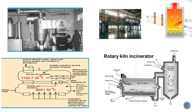In the double chamber, there are two chambers — the first for the burning process and the second for post-combustion. The single chamber has just one chamber. The rotary kiln incinerator has a rotating oven and then the waste is passed to a secondary combustion chamber.